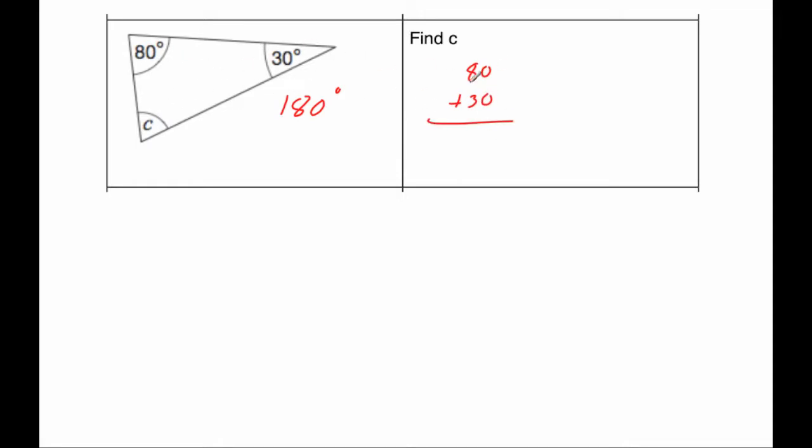So adding the two angles together, 0 plus 0 is equal to 0, and 8 plus 3 is equal to 11, so 80 plus 30 is 110 degrees. So to see what's left, we just need to take the 110 degrees away from the 180 degrees. And when we do that, we get 0 take away 0 is 0, 8 take away 1 is 7, and 1 take away 1 is equal to 0, so the answer would be 70 degrees.